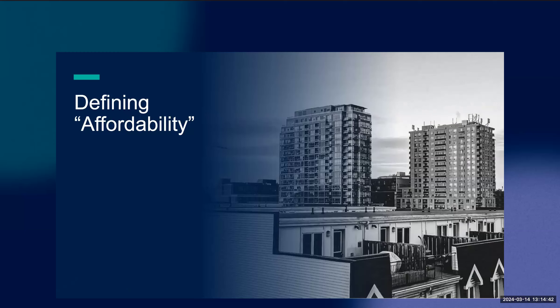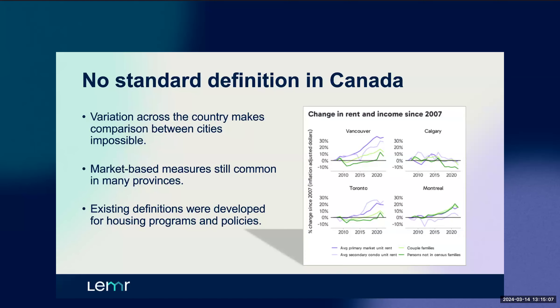Thank you so much, Annie. Before I start, I want to say it was a very interesting project for us, not just because this is such an important topic, but because of the collaboration — the partnership of bringing data scientists across three nonprofit organizations together, along with the support from our data scientist consultants. So I'm going to start with the affordability piece. One of the first things we had to do was decide how we were going to define affordability for this project. The problem facing us is that there is no standard definition for this in Canada, and that makes comparing cities against each other or comparing over time challenging.